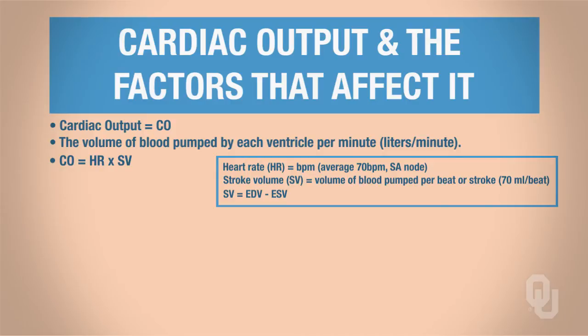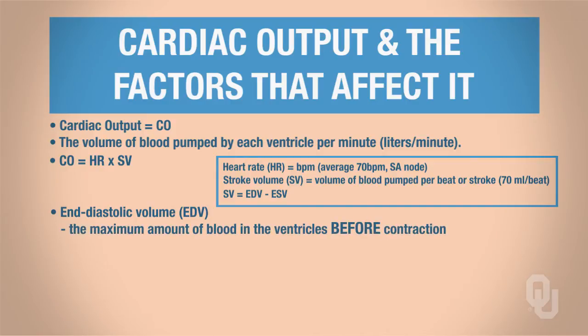Let's define these terms. For end diastolic volume, first think about the word diastole — it means relaxation of the ventricles. End diastolic refers to the end of relaxation, which is right before the heart muscle contracts, and the word volume pertains to the volume of blood in the ventricles. So EDV, end diastolic volume, means the maximum amount of blood in the ventricles before contraction.